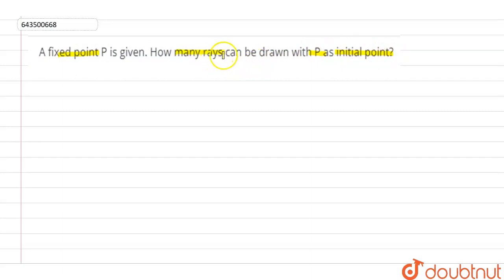First, we try to know what a point actually means. A point is a location represented by a dot. This point does not have any length or width.